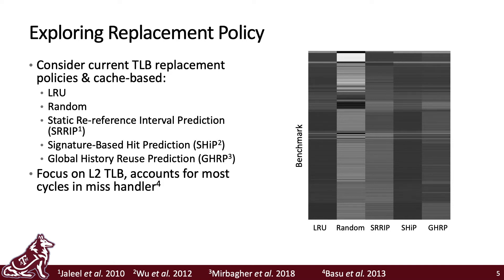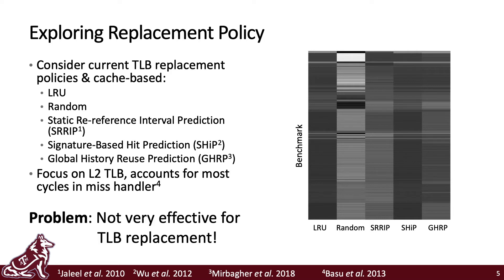However, we have a problem — these policies don't seem very effective for TLB replacement. To the right is a heat map showing hot and cold TLB entries for various benchmarks among the replacement policies considered. Darker colored entries denote TLB entries that are dead, or not re-referenced often. These entries should be kicked out to make way for more useful data. Optimally, we wish a heat map to show light colored entries signifying frequent entry re-referencing, a sign of a useful caching structure.